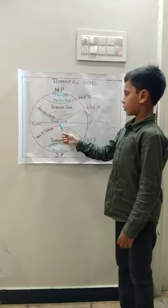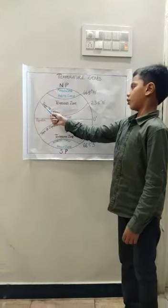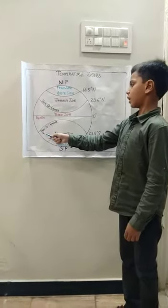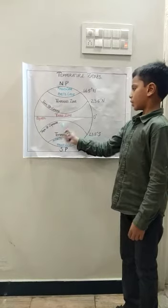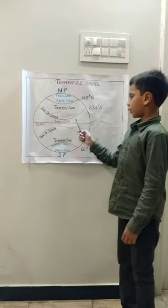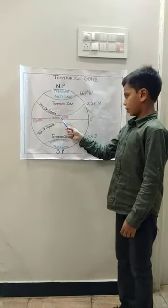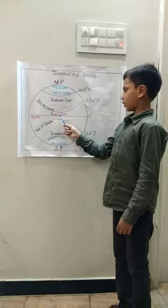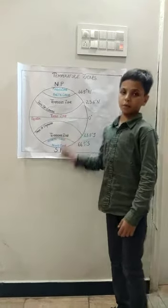Torrid zone. It lies between the Tropic of Cancer and the Tropic of Capricorn. Sun rays fall directly on this zone, so the temperature is maximum.